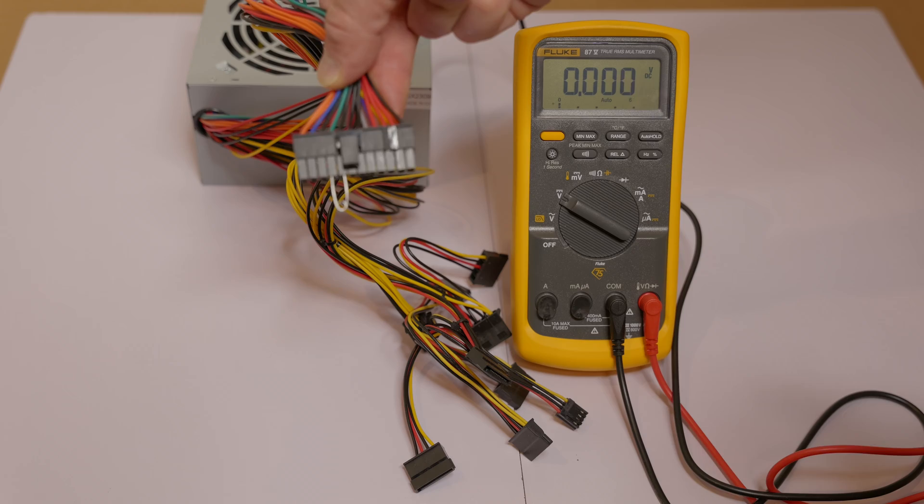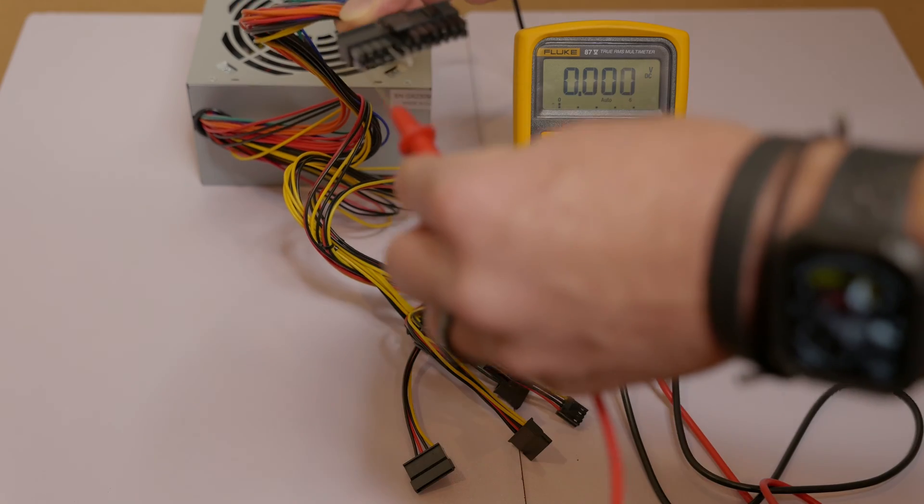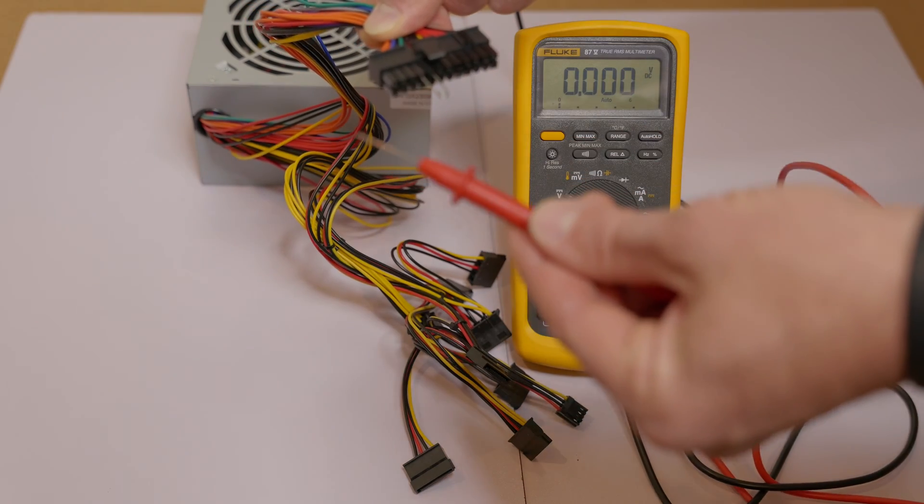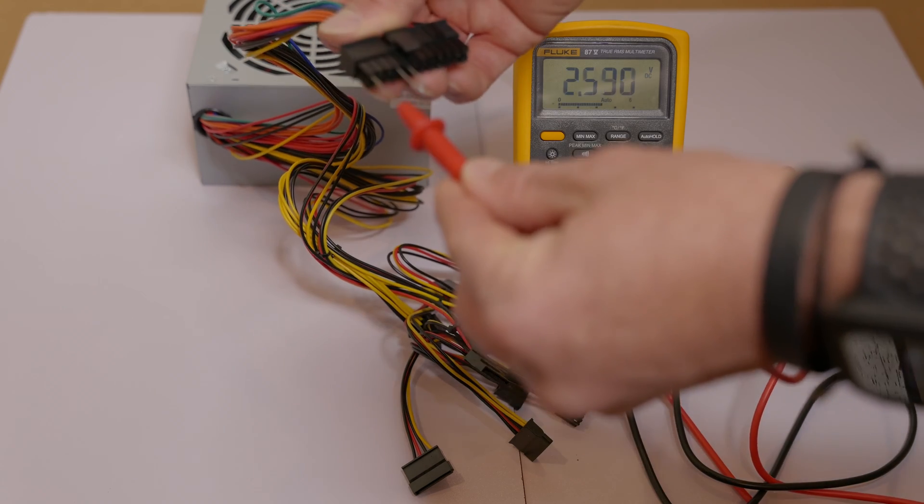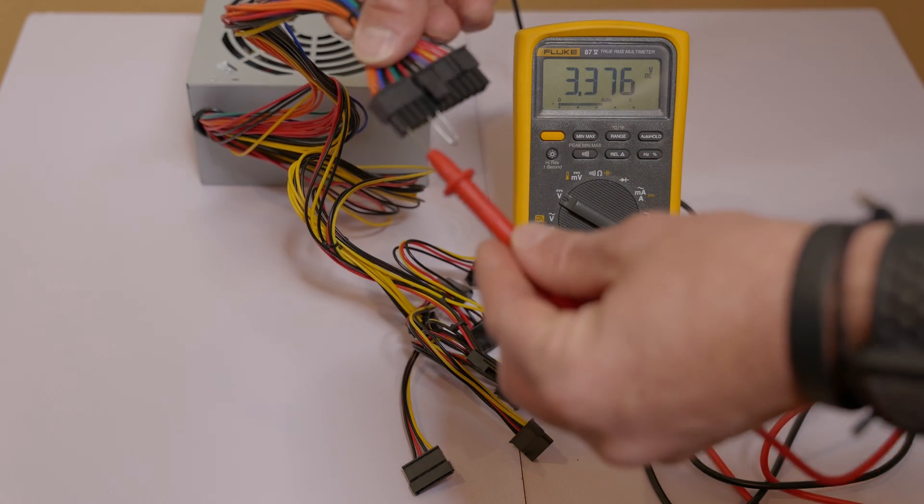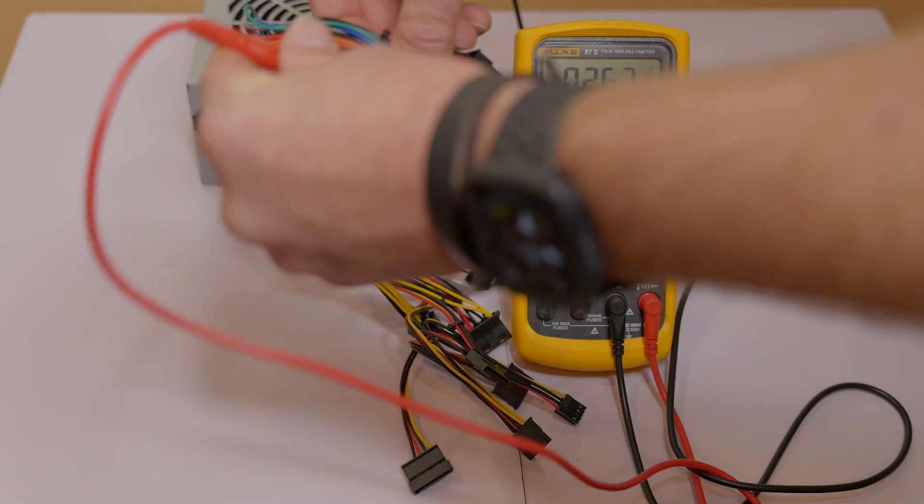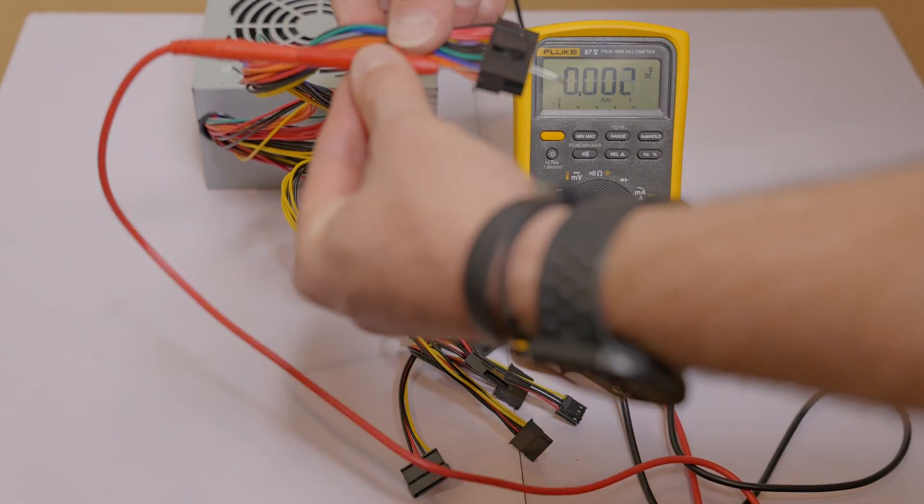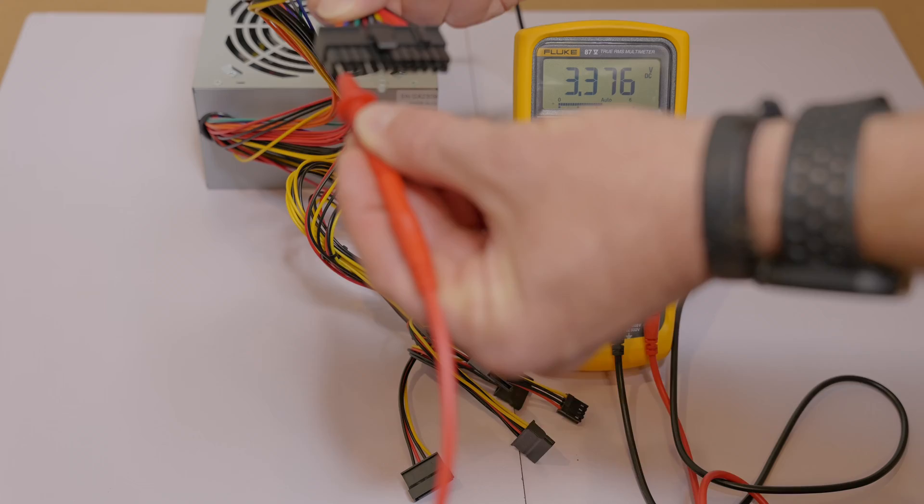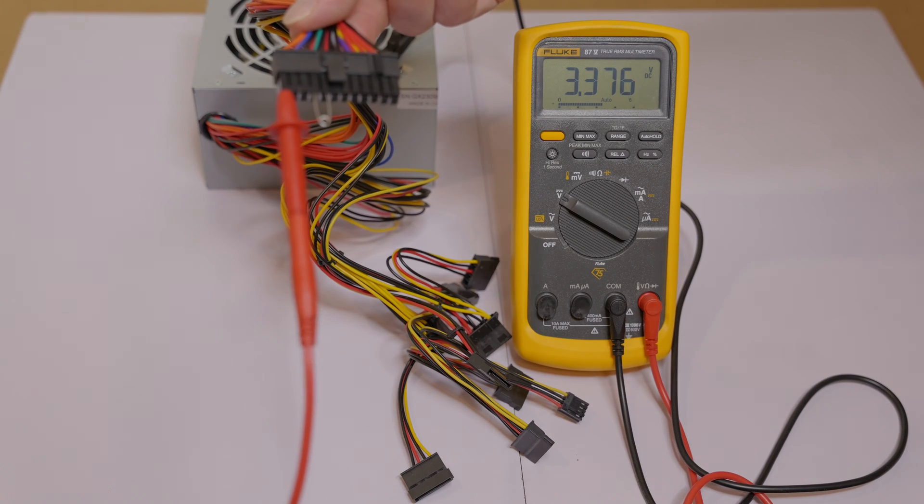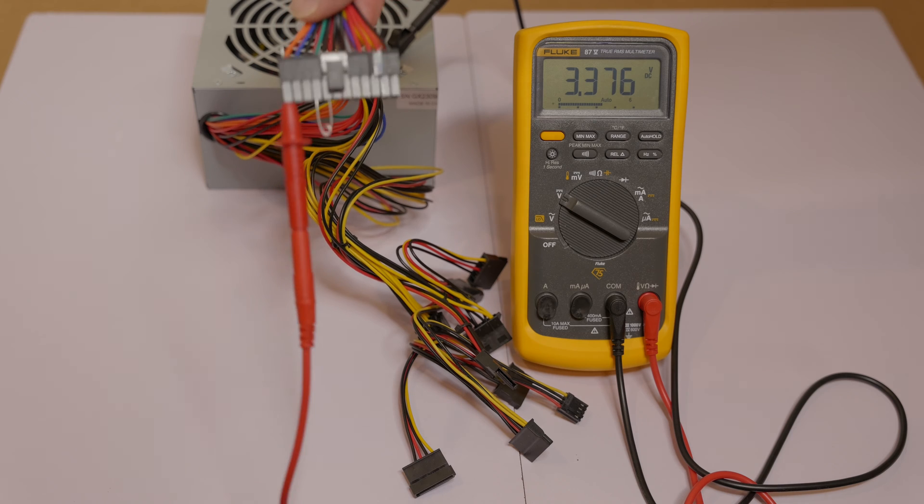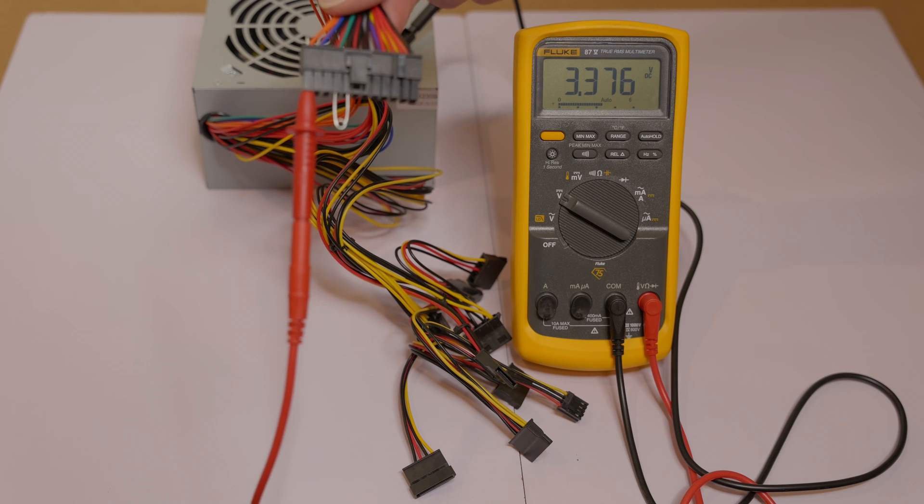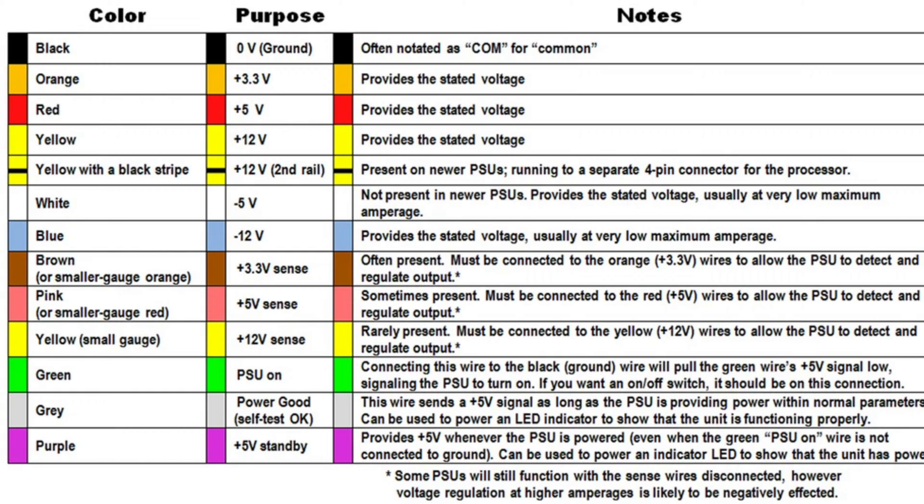So starting out with our main power connector, we'll check the orange wires. We're going to carefully insert our red probe from our multimeter into the wire. Now you can either go from the front or even from the back of the pin if you feel safer doing it that way. I'm going to go in from the front. Now, as you can see on my meter, I have 3.376 volts DC. Now that is the orange wire, so that should match up with your voltage chart as far as color codes.